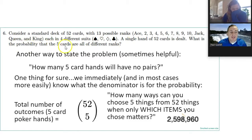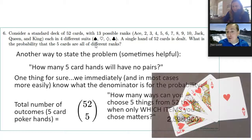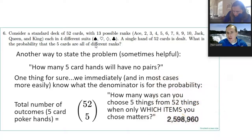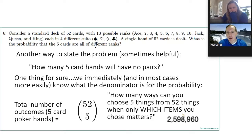What's the probability that the five cards are all of different ranks? Different ranks means you don't have a pair. You might still have a flush — say two, four, six, eight, ten all of hearts. A flush in poker is a pretty good hand, something you'd want to hold on to.